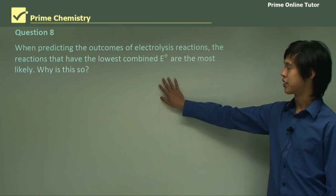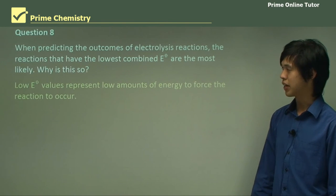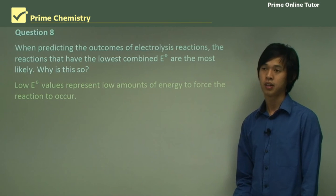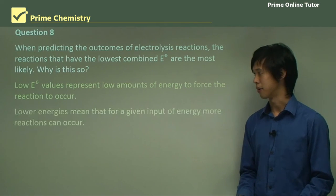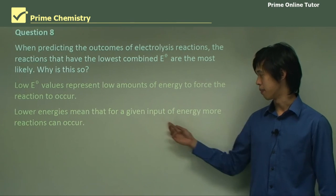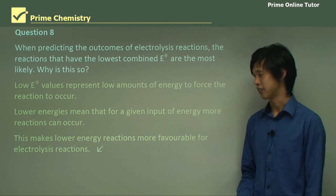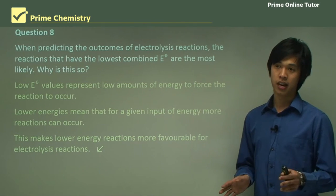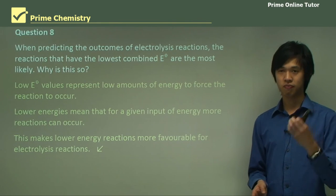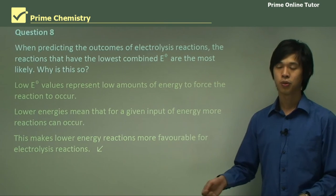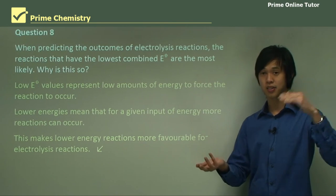When predicting the outcomes of electrolysis reactions, the reactions with the lowest combined E° value are the most likely. Low E° values represent low amounts of energy needed to force the reaction to occur — small numbers close to zero mean less energy is needed. Lower energies mean that for a given input of energy, more reactions can occur, making them more favorable. Nature always takes the lowest energy path: like a ball rolling down a hill naturally, it won't try to roll itself back up.